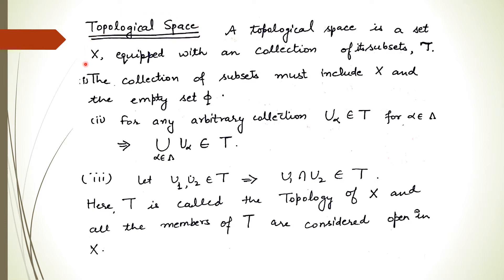So basically, we are given a set X. We take its subsets in such a way that it satisfies these three conditions: this collection must contain the set X and the empty set; if there are some members, their arbitrary union also belongs to T; and finite intersection also belongs to T. Arbitrary union but finite intersection. Then this collection is a topology on X, and X together with this topology is called the topological space.